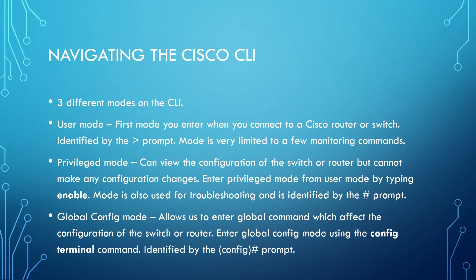The next mode up is called privilege mode. Privilege mode allows us to do monitoring and troubleshooting of our Cisco device — we can view the configuration of switches and routers, but we can't make any configuration changes. We can enter privilege mode by typing the enable command from user mode. This mode is identified by the hash prompt. We will be spending quite a bit of time in privilege mode, especially when troubleshooting or checking the configuration of our Cisco device.